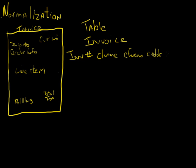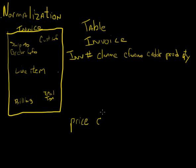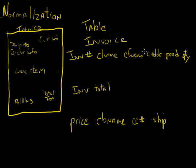I'll have line item information — product, quantity, and price. For billing information I'll have customer billing name and credit card number. I'll also have invoice total. And since the ship-to may not be the same as my customer address, I'll have a ship address, ship city, and all those different things.